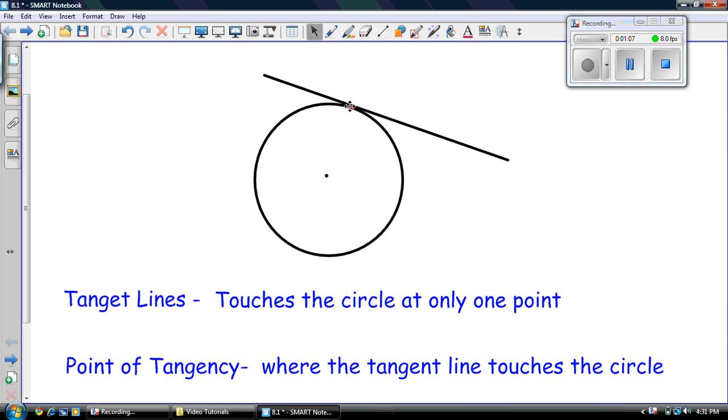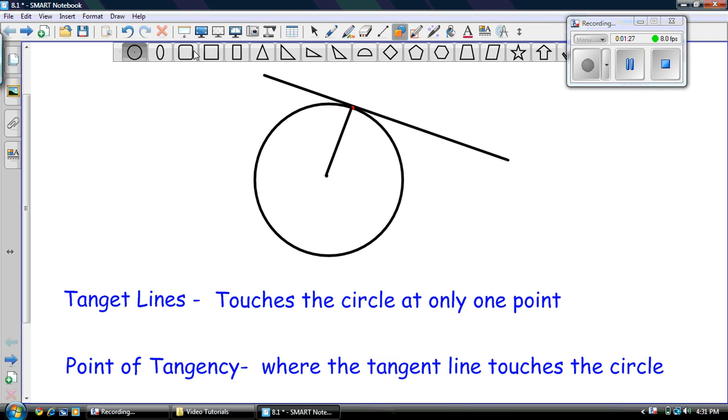So something very special happens at this point. If we have a line coming directly from the center that touches that tangent point, what ends up happening is we get this right angle that forms here. Right at this point right here, we get a right angle.